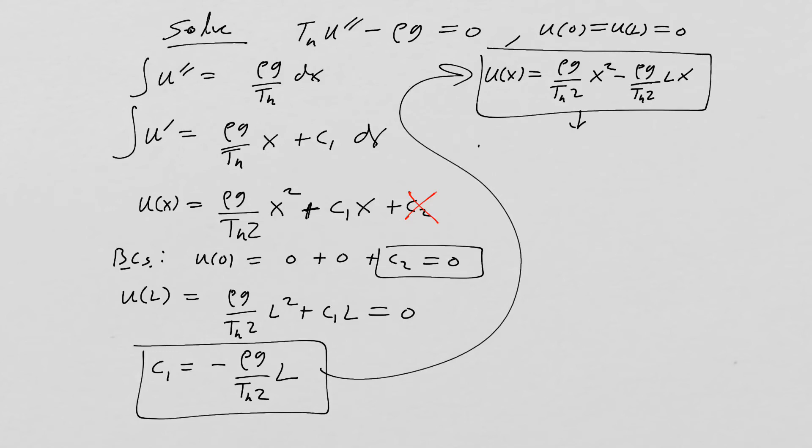We can do a little bit of simplification here. It looks like I can factor out a factor of ρg and a T_h and a two there and a factor of x. And then we're left with x minus L there. And clearly what we have here is an upward facing parabola.